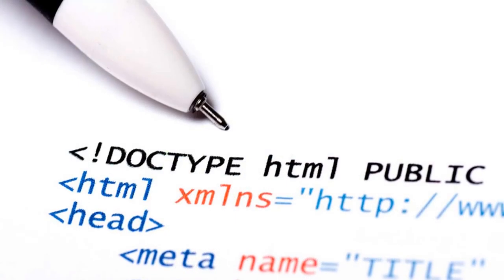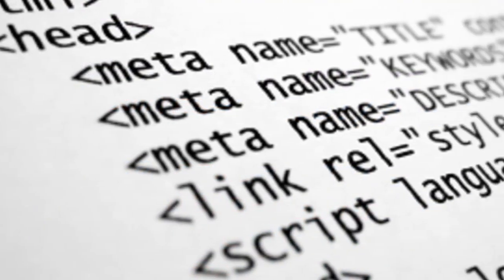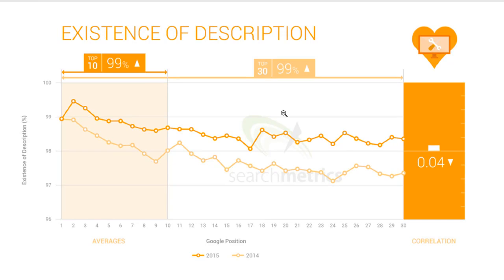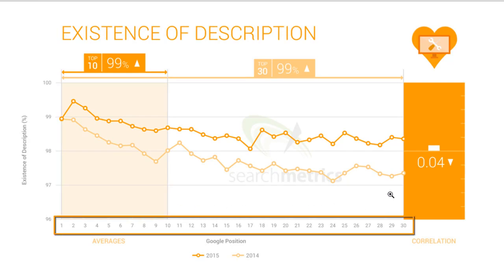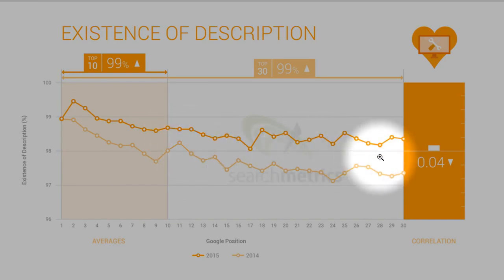Though it's not important to add keywords in meta description, the existence of meta description is very important. Just see this test result — a research of 10,000 keywords. Here you can see that for the top 30 search results, almost 98 to 99 percent of the posts have meta description in 2014, and this percentage increased by another one percent in 2015.